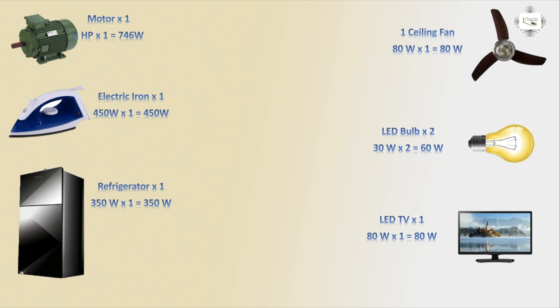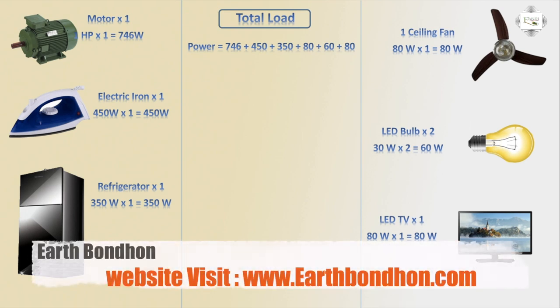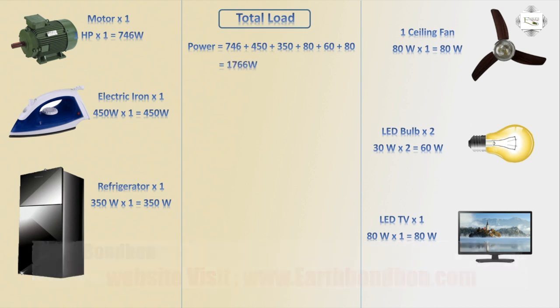Now let's calculate the full load for one room. The MCB — mini circuit breaker — total load power equals: 746 plus 450 plus 350 plus 18 plus 16 plus 18, which equals one thousand seven hundred sixty-six watts total.